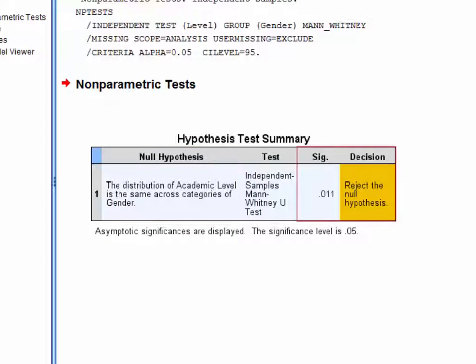So we're in a position where we can reject this null hypothesis because the significance level for the test is less than alpha, which has been set at .05 by default.